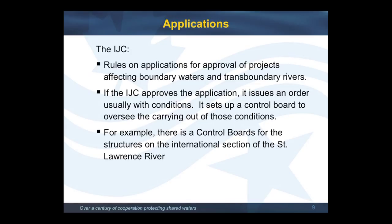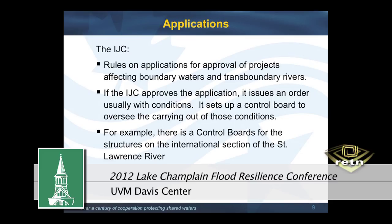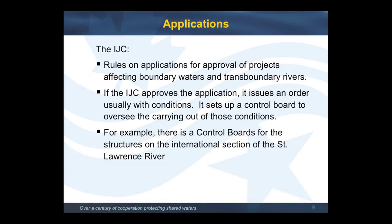The other way the IJC gets work is by an application. The commission makes a decision acting in a quasi-judicial manner on applications for structures presented to it by the two governments. So if a private company wishes to build a dam, they submit an application to the governments and the governments submit it to the IJC. The IJC can decide whether to allow the building of a structure on, over, or under a boundary water, and the issue is whether it will affect the natural level or flow in the other country. If an application is approved and a structure is built, there is an order on that structure, and the IJC would almost always set up a permanent control body — one of the boards mentioned earlier.